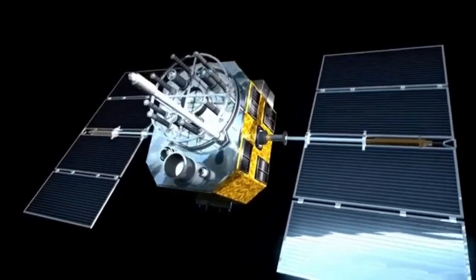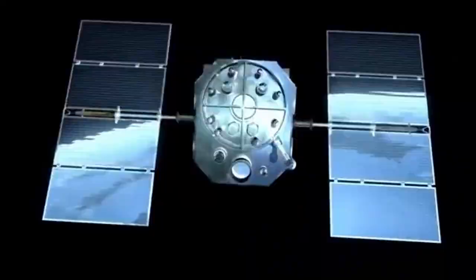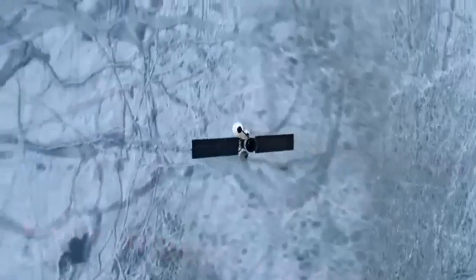Originally designed to last just five years, Voyager 2 has far surpassed expectations, continuing to transmit data over four decades later. Its longevity is a true reflection of the ingenuity and skill of the engineers who created it. Even in its advanced years, the Voyager 2 team has cleverly managed its power, shutting down non-essential systems to keep its instruments operational. Today the spacecraft runs on less power than a standard light bulb, yet its scientific contributions remain invaluable.